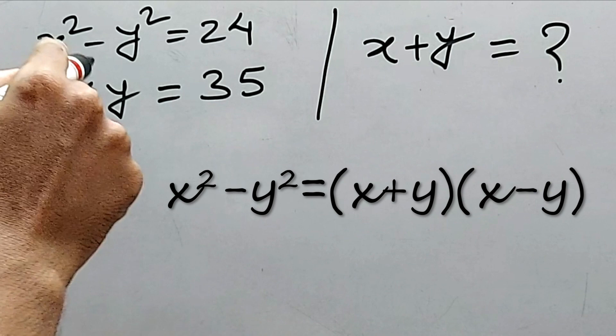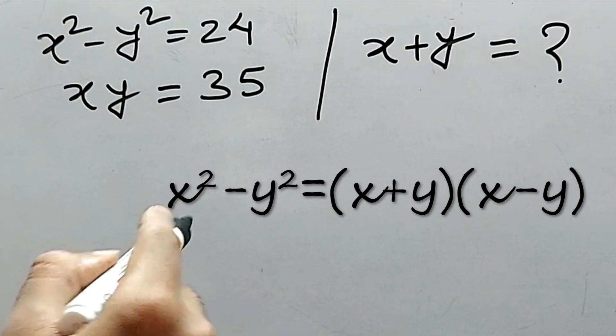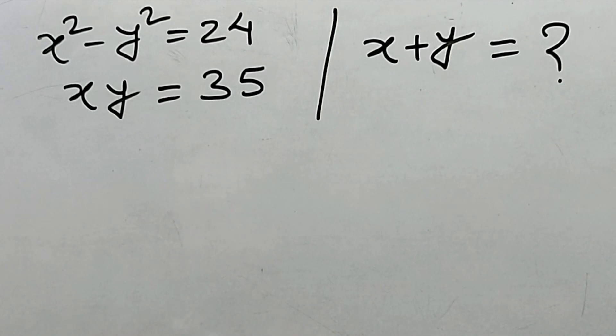Well, seeing this x squared minus y squared, you'll definitely think of that formula x plus y into x minus y, right? But this one will not work in that way. So how to work?